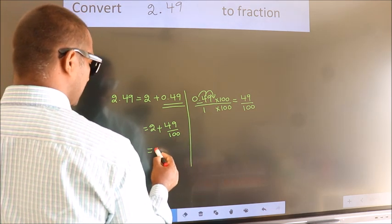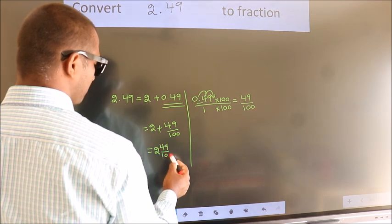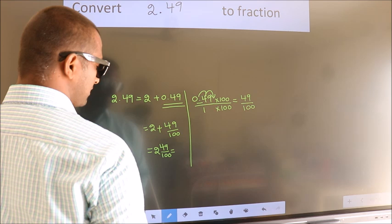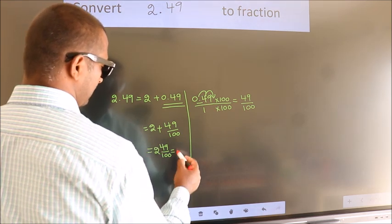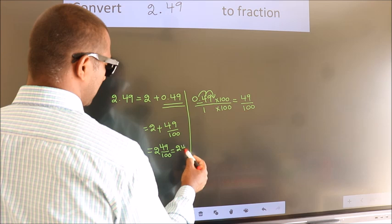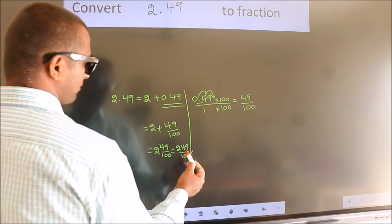In mixed fraction it is 2 and 49 over 100. In improper fraction it is 2 into 100, 200 plus 49. 249 by 100 is our fraction.